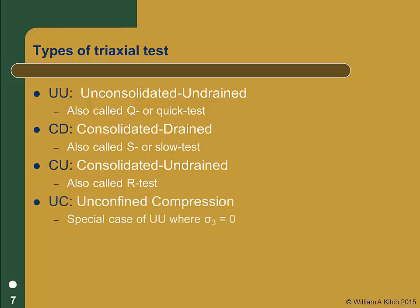Finally, we sometimes perform an unconfined compression test on cohesive soils. Strictly speaking, this test is not a triaxial test — it is not performed in a triaxial cell. It is a simple compression test without any consolidation or confining pressure, similar to an unconfined compression test on a concrete cylinder. Since the test is not performed in a triaxial cell, we have no control over drainage conditions. We shear the soil very quickly and assume there is no drainage. This test is equivalent to a UU test with sigma3 equal to zero.